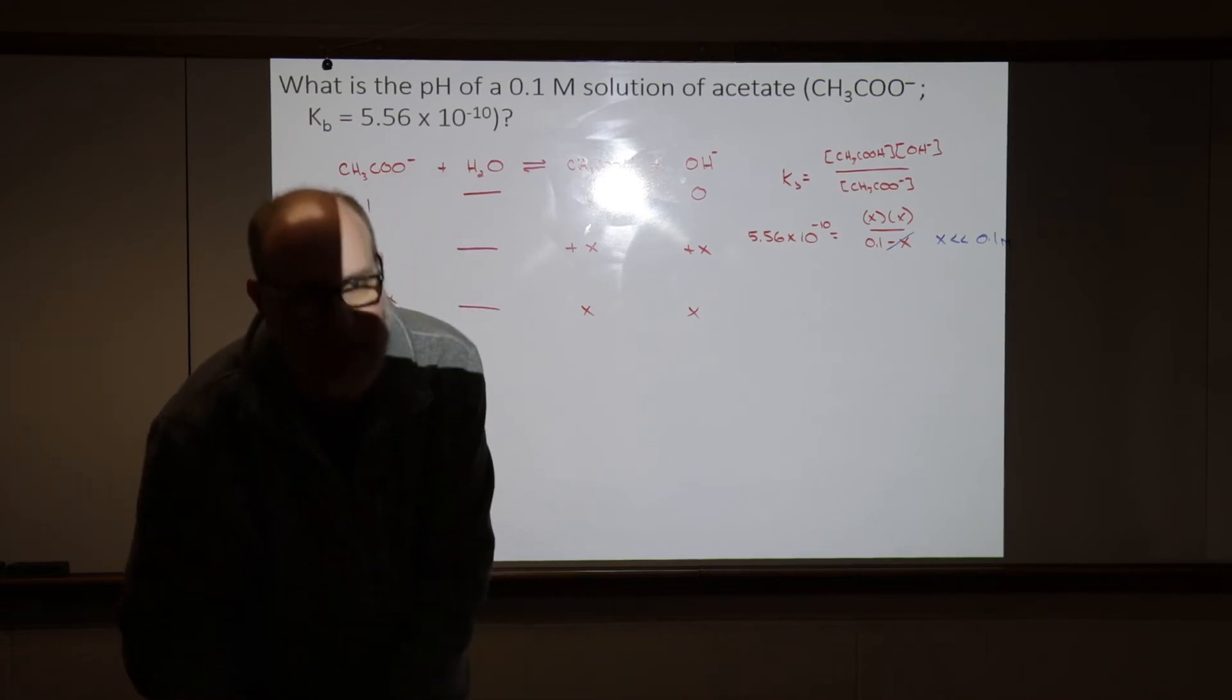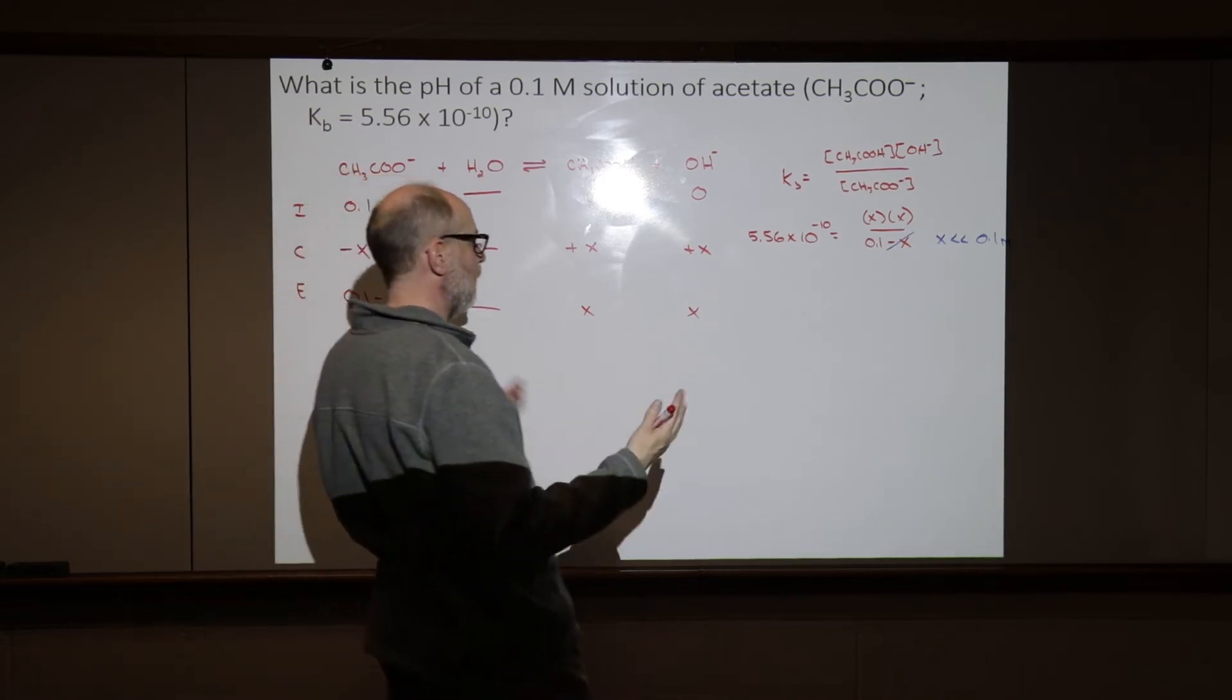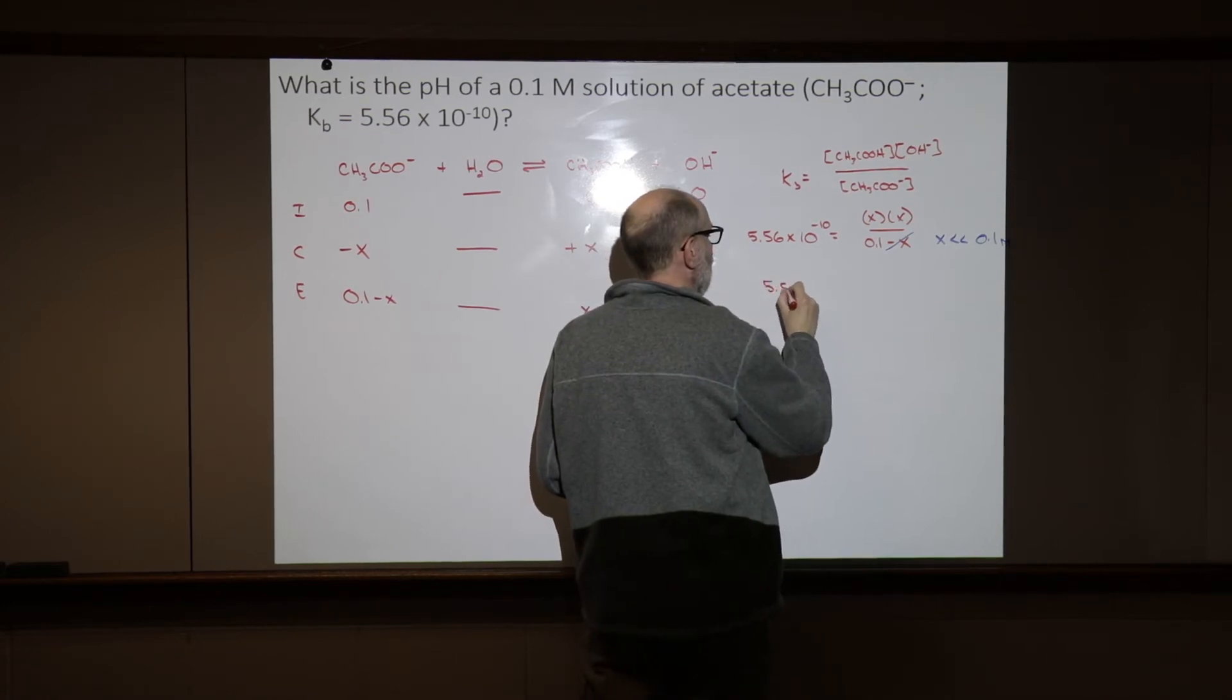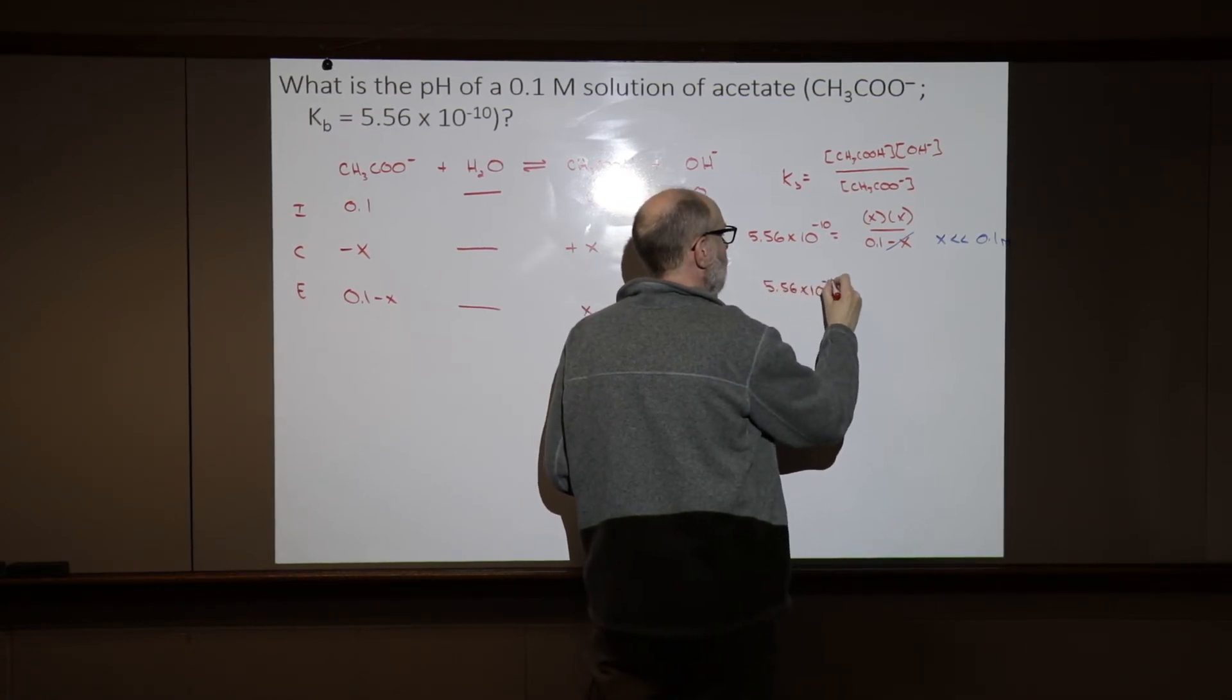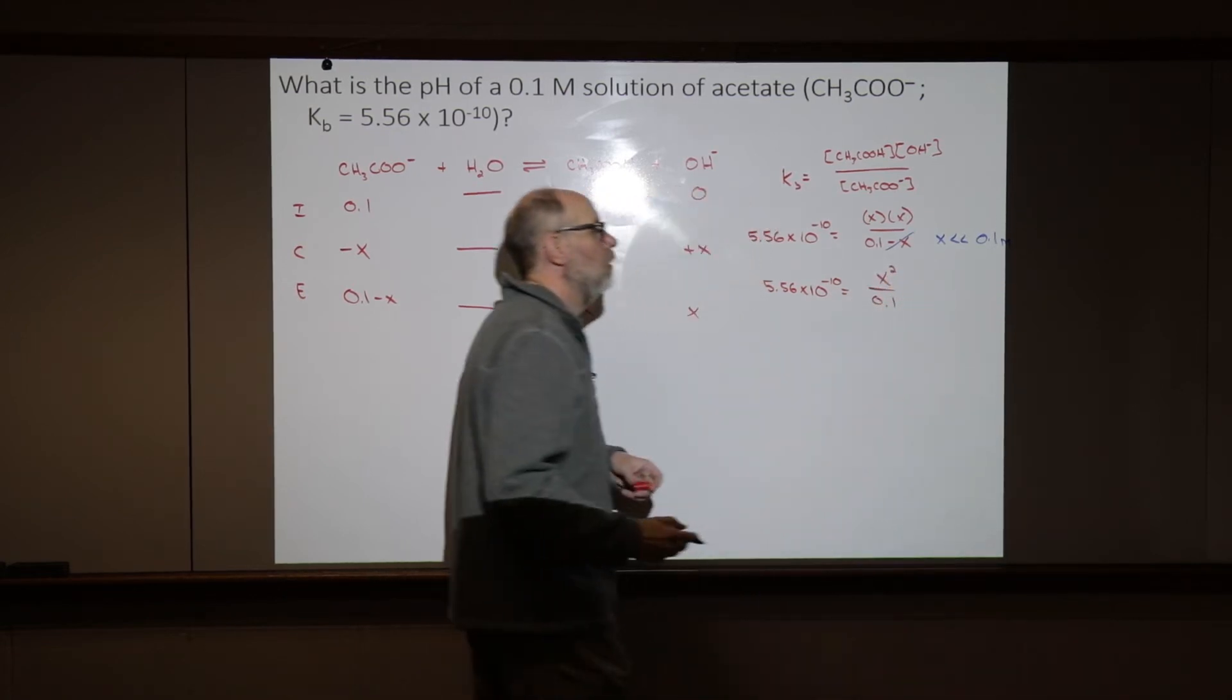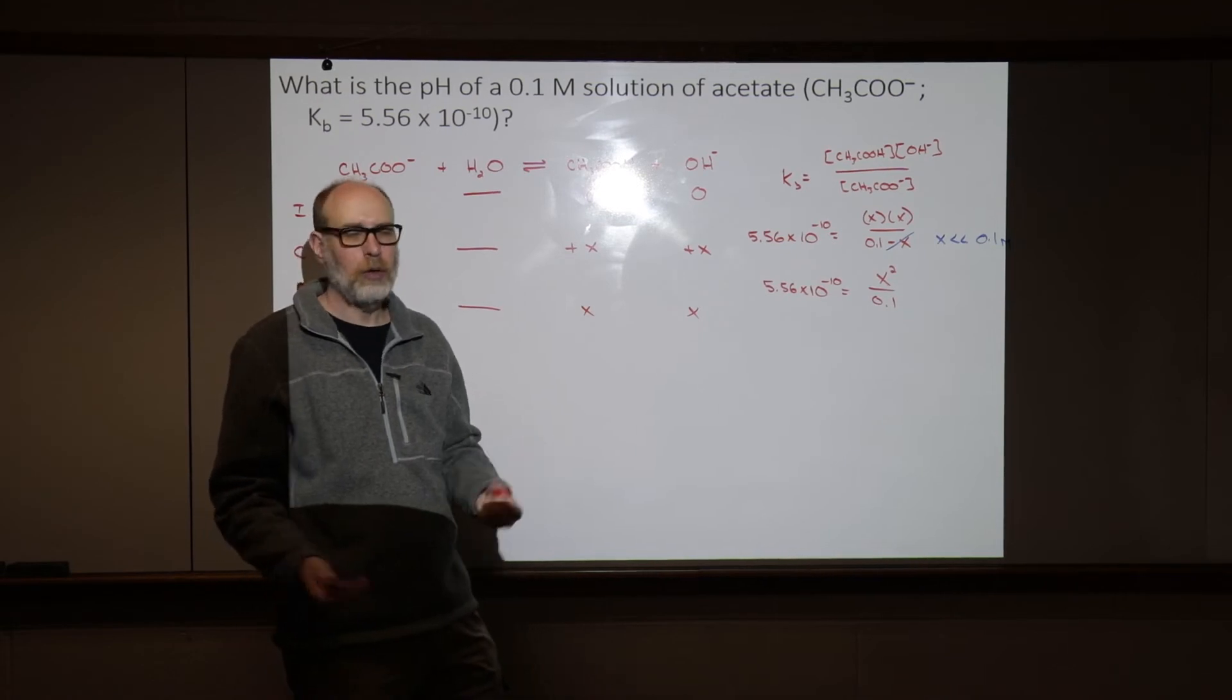And if that x goes away, it makes our life a whole lot simpler. Because now we have an expression that's just 5.56 times 10 to the minus tenth equals x squared over 0.1. We're only going to have to take a square root.